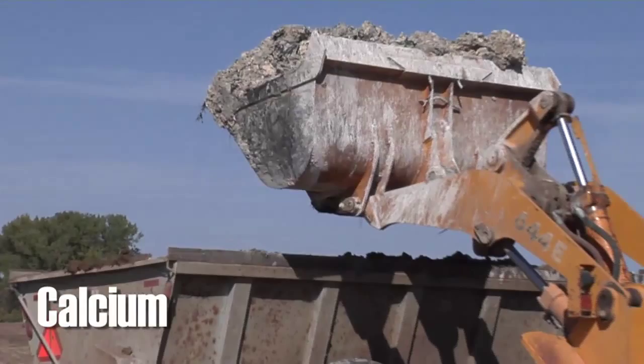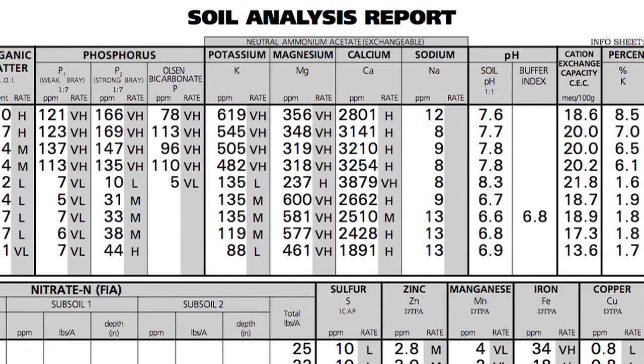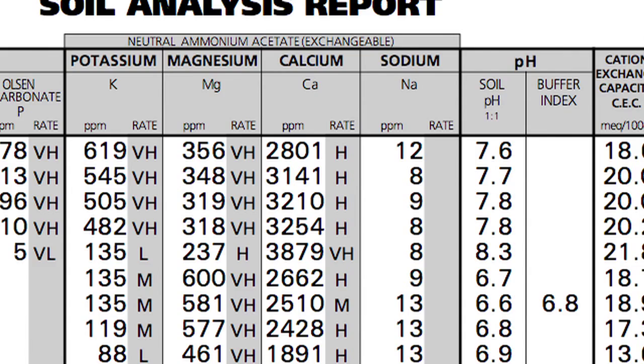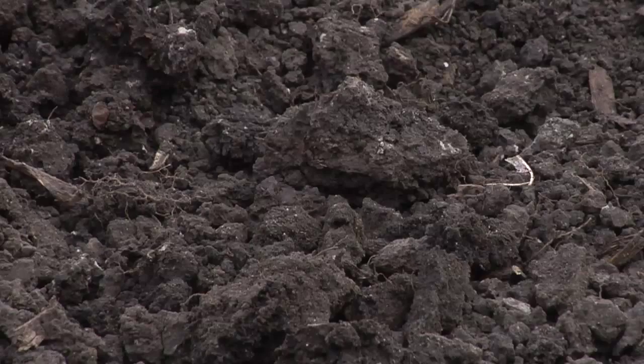Hopefully you've been doing some soil testing this fall, and when looking at the analysis in parts per million, you may have noticed that the largest number on the whole test is calcium. It's the number four nutrient right behind nitrogen, phosphorus, and potassium — the next one your crop needs the most pounds of is calcium. There are many things about calcium's role in the soil profile and in the plant. Let's start by talking about calcium in the soil.